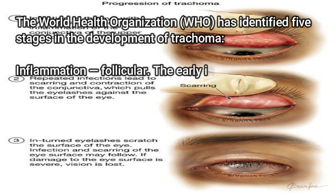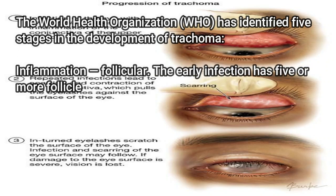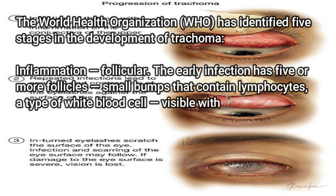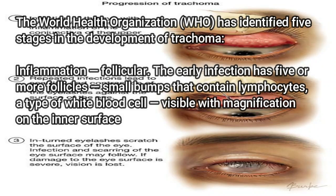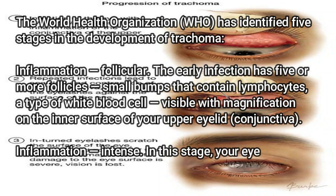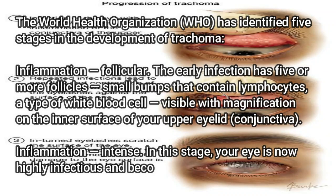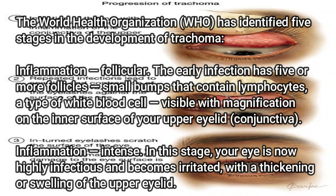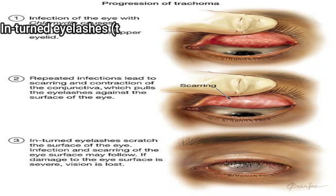The World Health Organization (WHO) has identified five stages in the development of trachoma. Stage 1 — Inflammation follicular: the early infection has five or more follicles — small bumps containing lymphocytes, a type of white blood cell — visible with magnification on the inner surface of the upper eyelid conjunctiva. Stage 2 — Inflammation intense: the eye is now highly infectious and becomes irritated, with thickening or swelling of the upper eyelid.